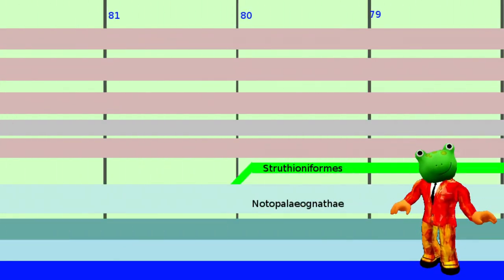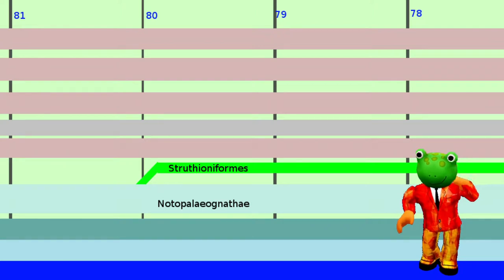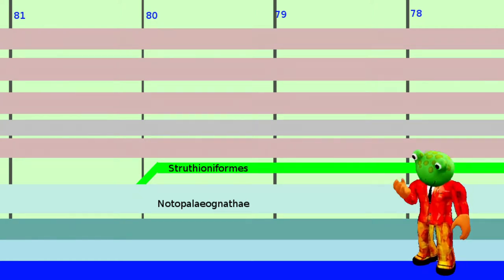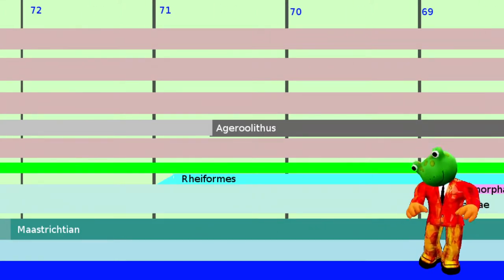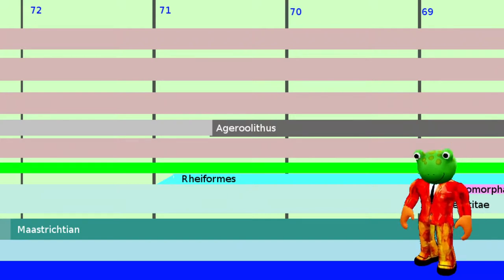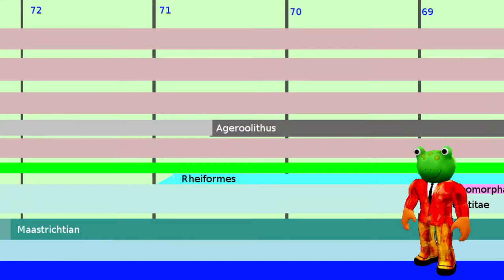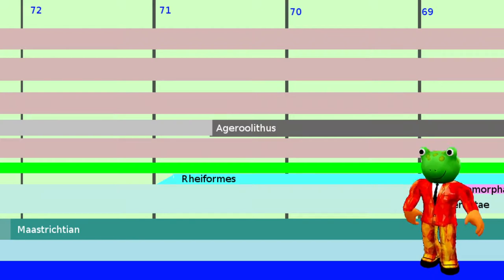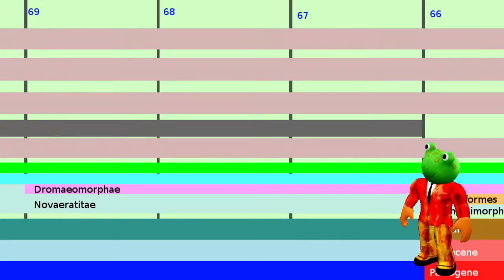The first certain event is the split of the Palaeognathii into the Struthioniformes and the Nothopalaeognathii. According to the molecular clock, this happened about 80 million years ago. The Struthioniformes is the ostrich group, the other group are the Southern Palaeognaths. Nine million years later, the Rheiformes split from the Nothopalaeognaths — this is the group of the South American Rhea. The remaining Nothopalaeognaths split about 69 million years ago into the Dromeomorphi and the Novioratitae.